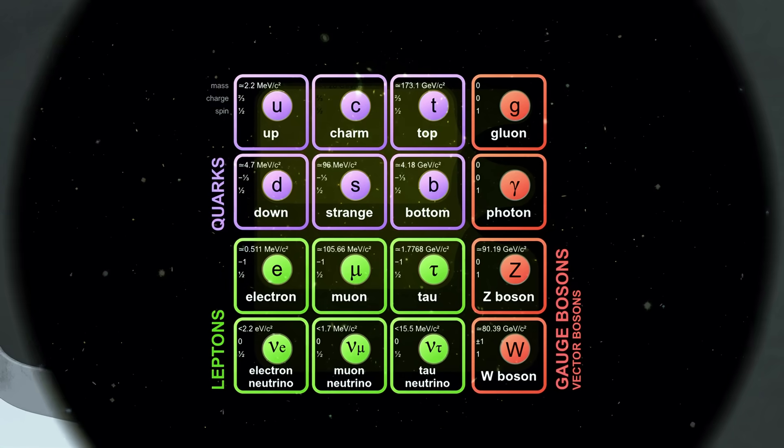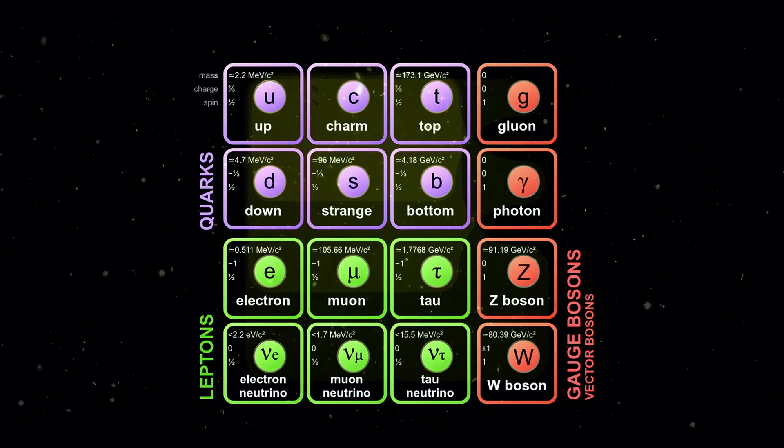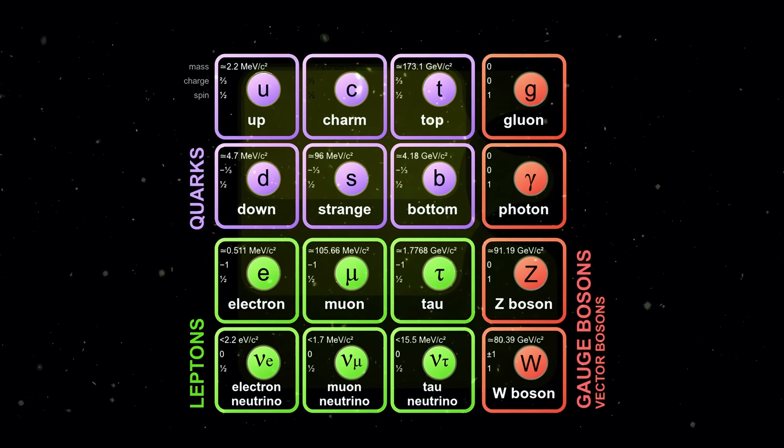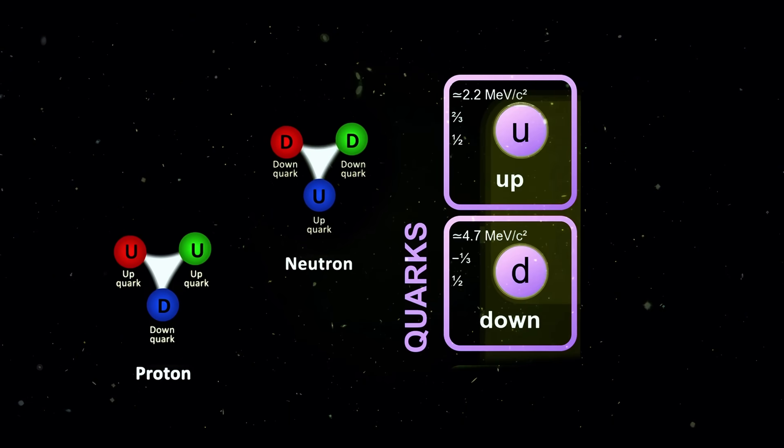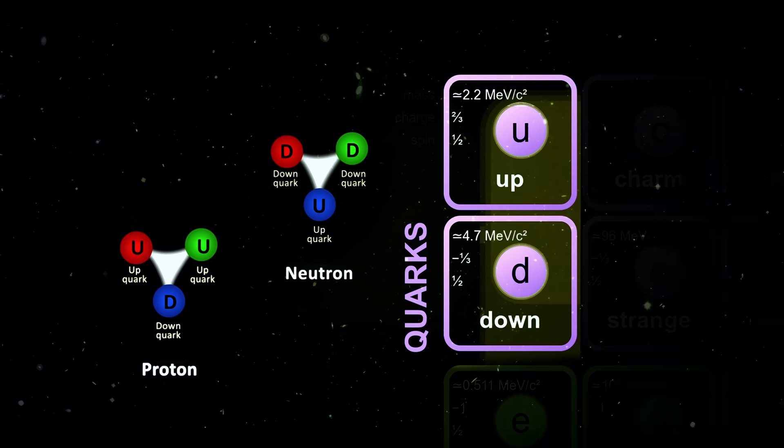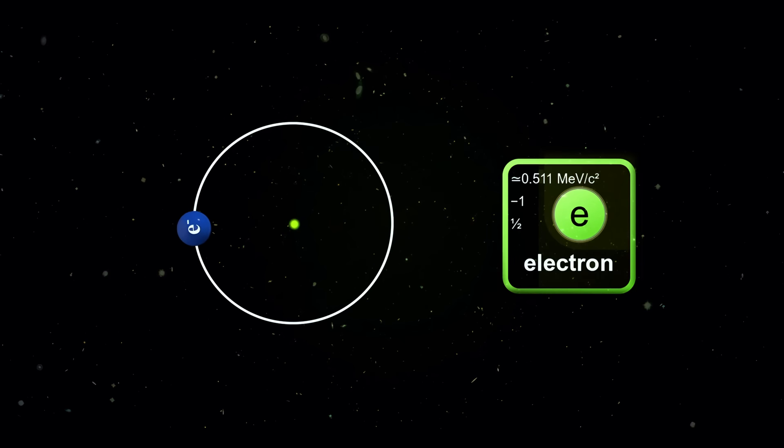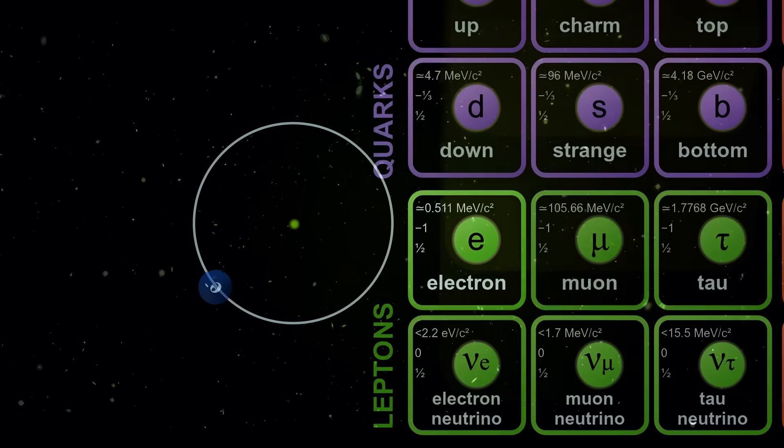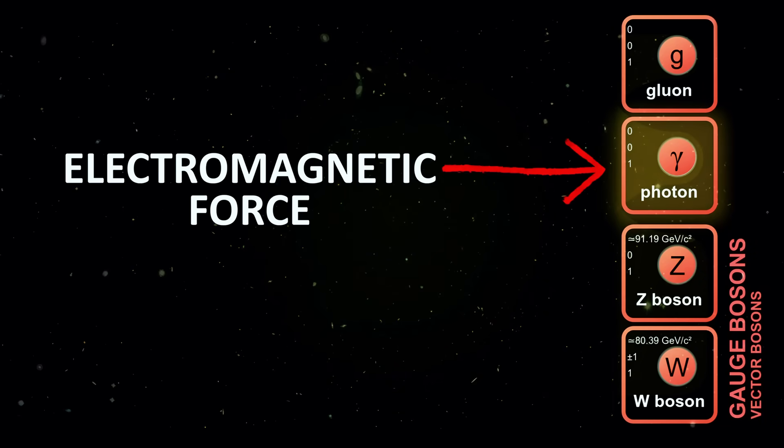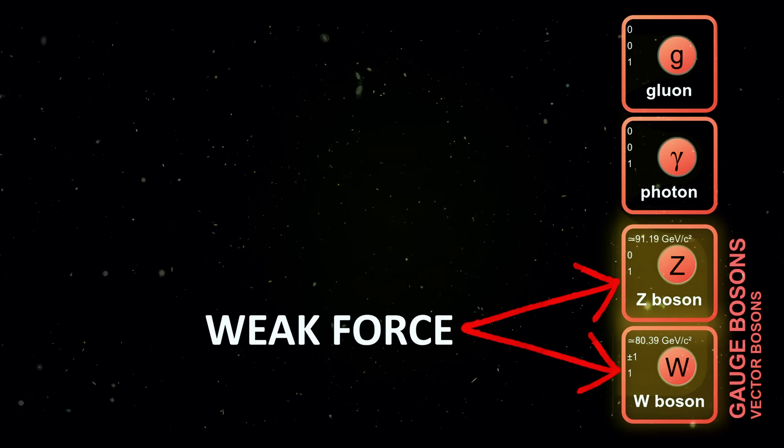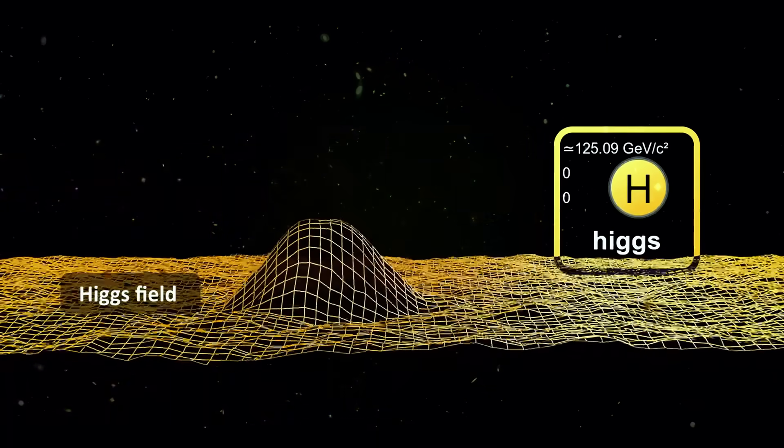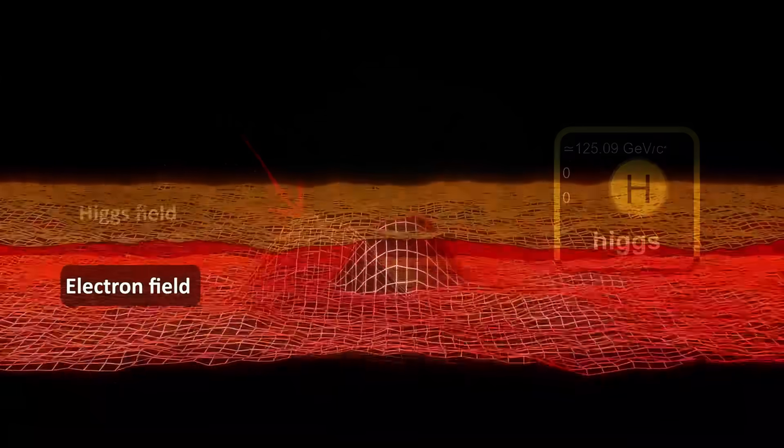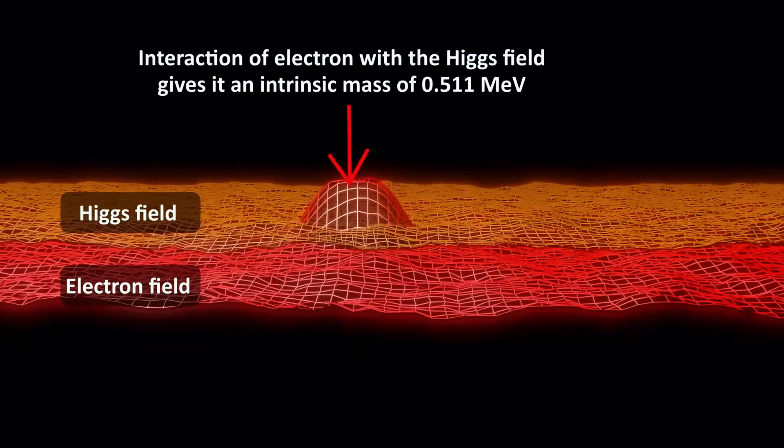The next tool is the standard model of particle physics, our best-tested description of all the non-gravitational forces and the fundamental building blocks of matter that we know of. Quarks combine to make protons and neutrons which make up the nuclei of atoms. Electrons are necessary to make neutral atoms and set their size. They enable chemistry and all the molecular interactions behind life. Gauge bosons carry forces. Photons carry the electromagnetic force, W and Z bosons the weak force, and gluons carry the strong force. The Higgs boson is the quantum ripple of the Higgs field. This field gives mass to fundamental particles like W and Z bosons, quarks and electrons.